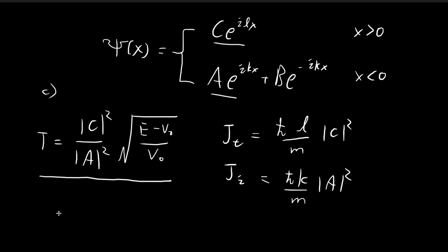The transmission coefficient is actually the ratio between these two probability currents. This formula applies for the other cases we've dealt with so far. If you go back to the case for the delta potential, we also had to deal with the transmission coefficient using the same formula. It's just that for those cases, the probability current terms were equal, so when you take the ratio, only the constants c and a survive. But now the velocities of the waves are different, so we need to consider the probability current instead.